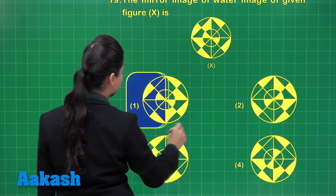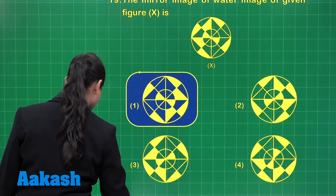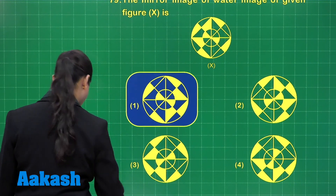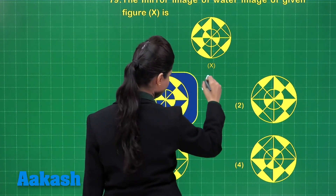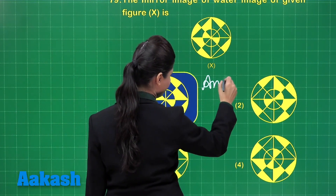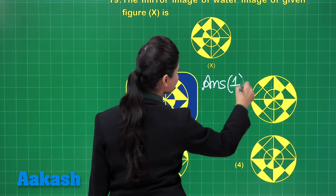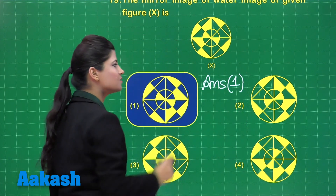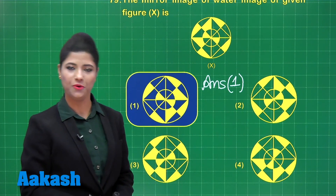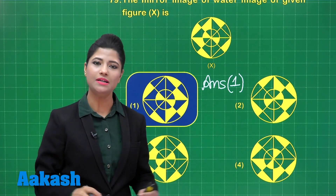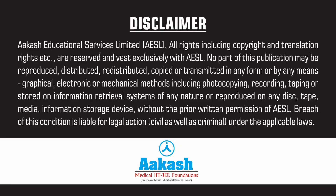By observation, the mirror image of the water image of figure X is in option number 1. So the answer for this question is option 1. I hope it is clear. Let us proceed to the next question.